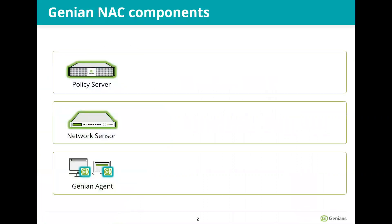The GINIAN NEC consists of three components: Poly server, network sensor, and GINIAN agent. Each component has its own role.